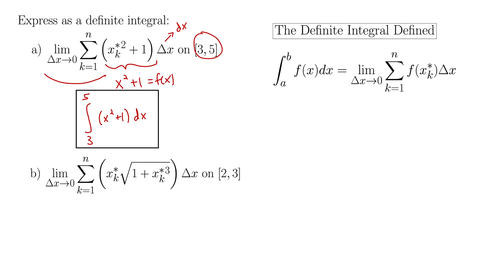Same thing with part b. We have the limit as delta x goes to 0 of the sum from k equals 1 to n. Now we have x_k star times the radical of 1 plus x_k star cubed.